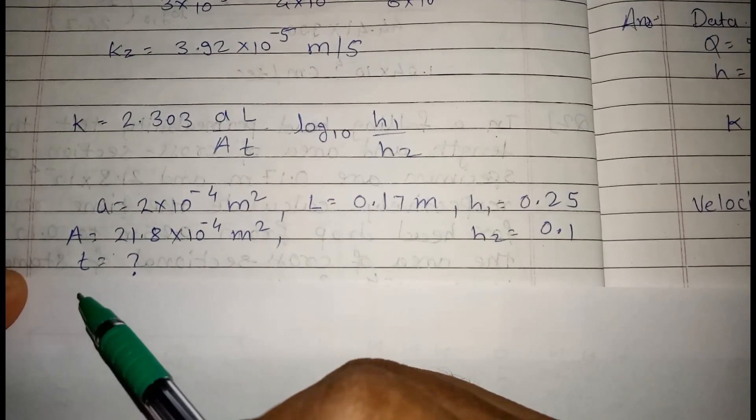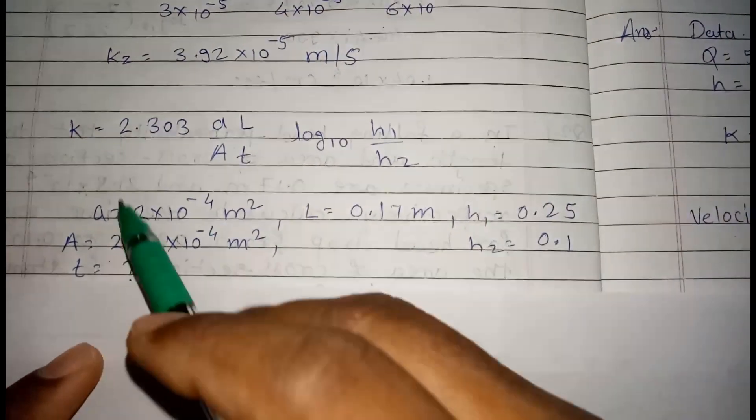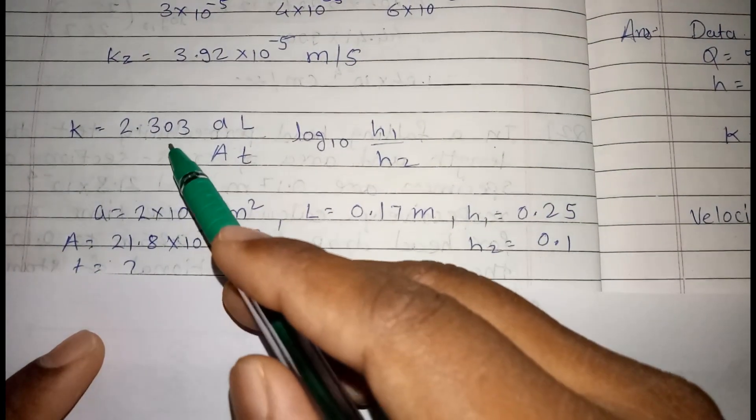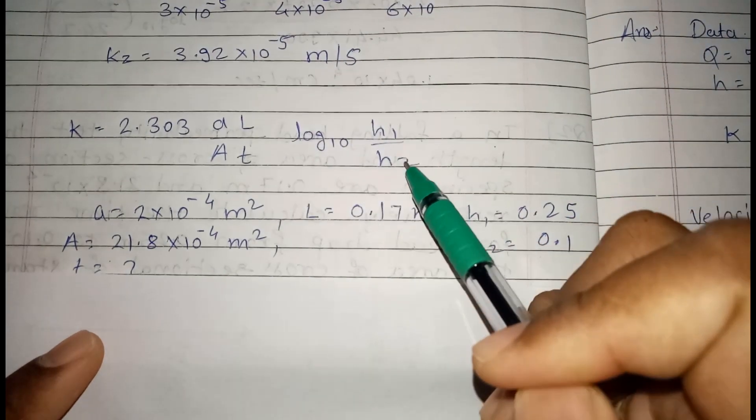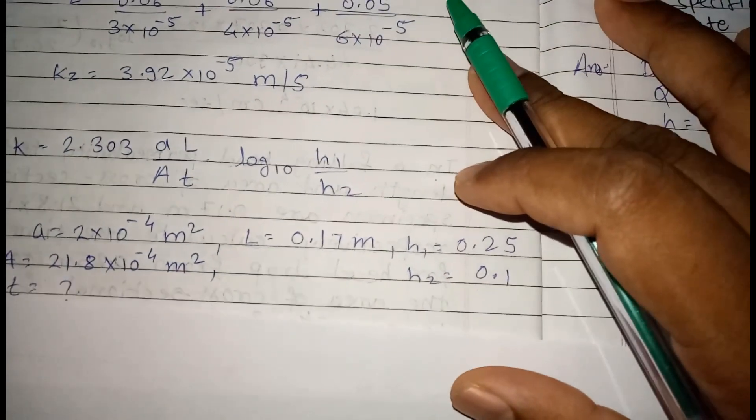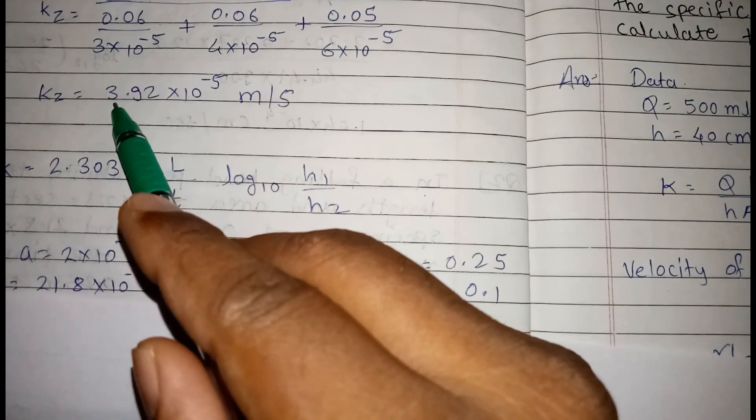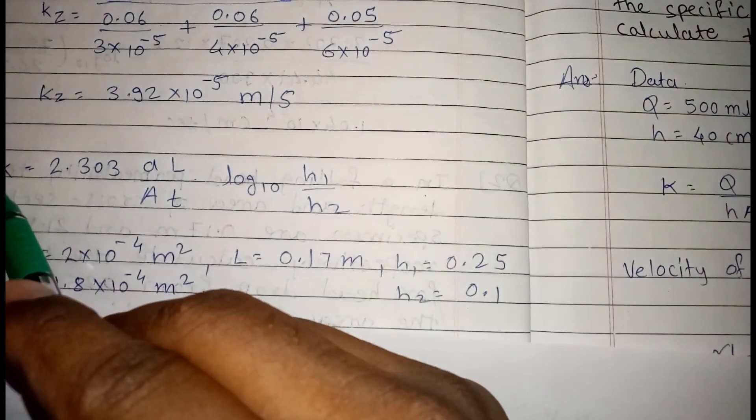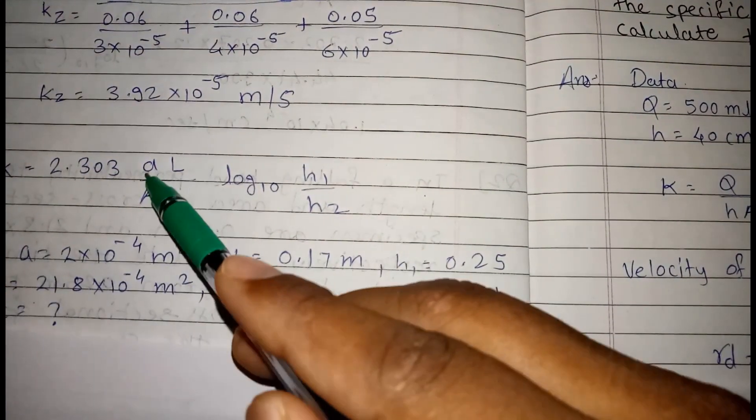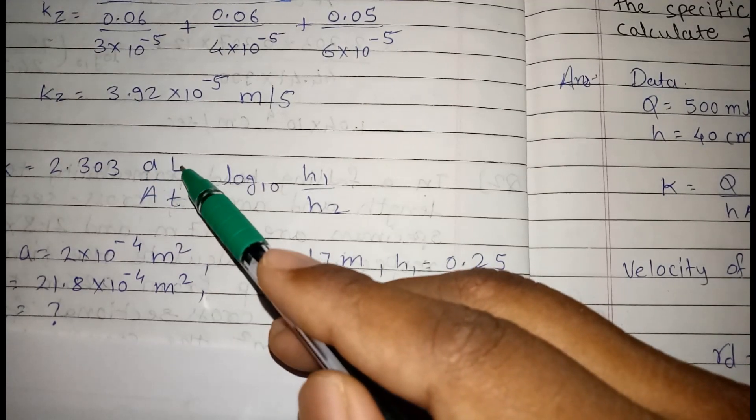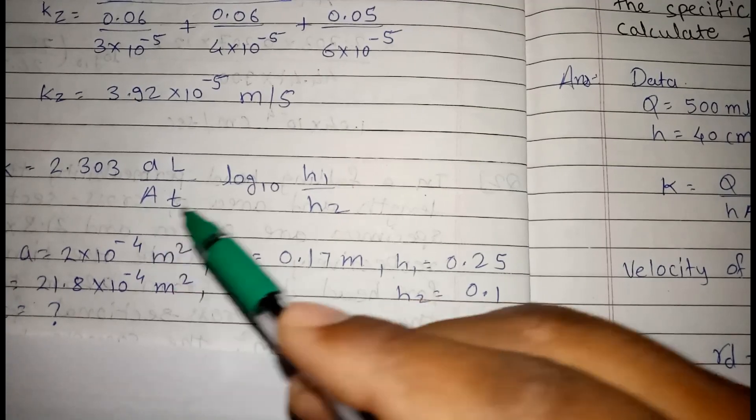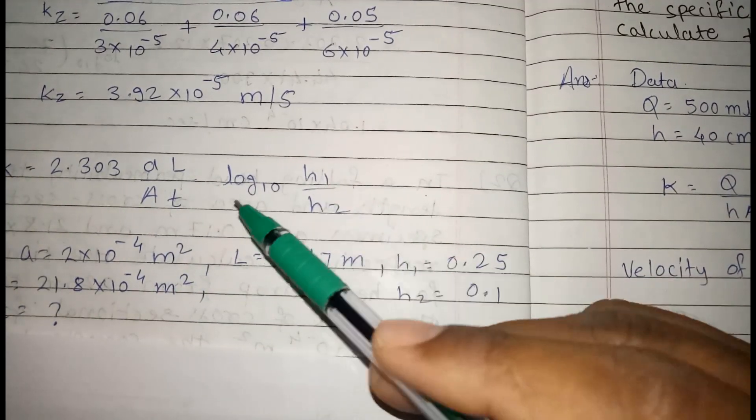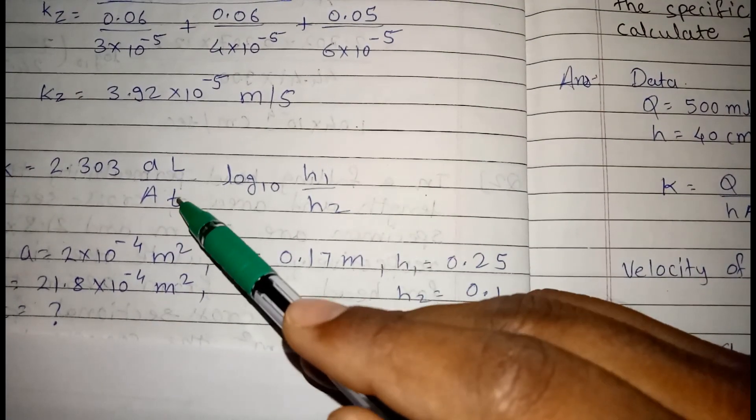We have to calculate the time. We know the formula is K is equal to 2.303 AL upon AT log 10 of H1 upon H2. So we just calculated the K value, average K value. So put average K value here. We know all area of standpipe, length of the sample, capital area of cross sectional soil sample area. We know H1, we know H2. Just we have to calculate the T.